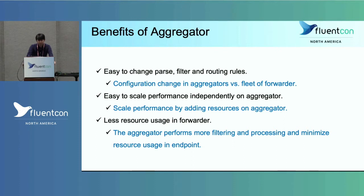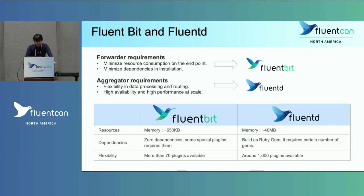The third benefit is less resource usage on the forwarder. Since the aggregator performs all tasks, the forwarder running on the endpoint does not consume many CPU resources. Endpoints are typically managed by the application team, who want to minimize resource consumption and minimize dependencies in installation. So we recommend users to deploy FluentBit as a forwarder, because FluentBit is a lightweight agent with no dependencies in installation, and all required plugins are already included in the FluentBit agent.